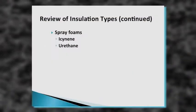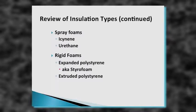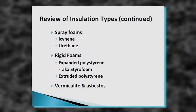Other insulation types include spray foam and rigid foam boards — both expanded and extruded. Rigid foam boards are available in various thicknesses from insulation supply houses. Expanded foam is formed inside a mold; extruded foam is shaped after expansion. We may also run across vermiculite and asbestos in older homes, though we don't use these anymore.